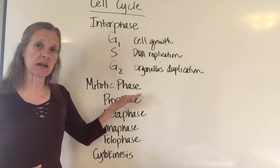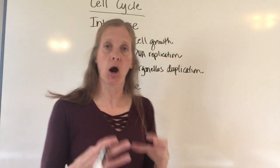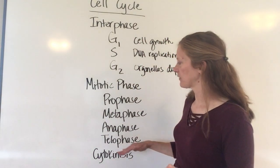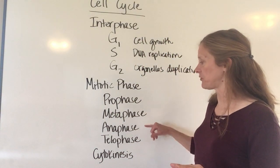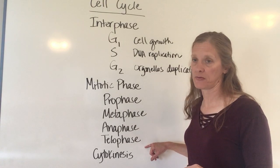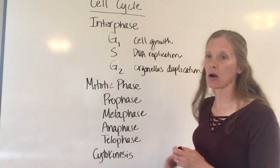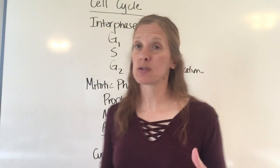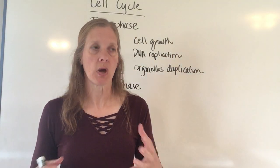Once we get through interphase, we go into the mitotic phase, which is the active part of cell division. It has four basic phases: prophase, metaphase, anaphase, and telophase. Prophase is where all of your chromatin is going to condense.